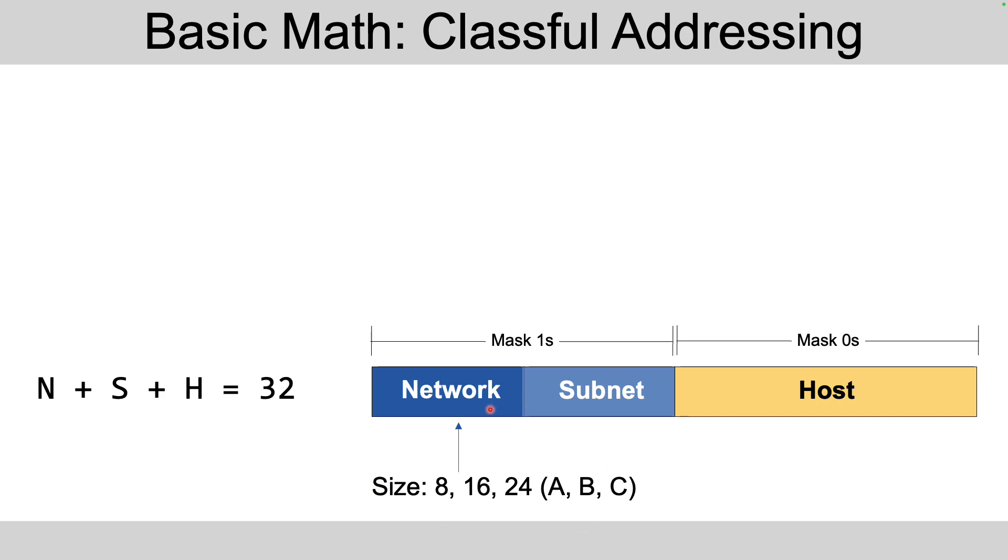So you can analyze an address or a network with the chosen mask and apply these class A, B, and C rules and figure out the size of the network, subnet, and host fields. Much like you could with classful addressing, but in this case, with classful addressing, you end up with three fields which together add up to 32.